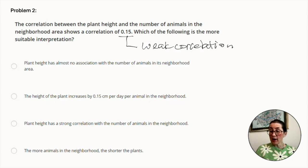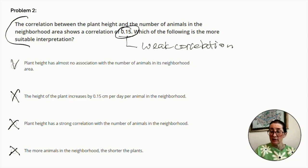Let's start from bottom to top. The more animals in the neighborhood, the shorter the plants. Given the weak correlation, this would not be the correct answer. Plant height has a strong correlation with the number of animals in the neighborhood. Again, dealing with a weak correlation, this cannot be the answer either. The height of the plant increases by 0.15 centimeters per day per animal in the neighborhood. Our question deals nothing with the plant height growth, and the 0.15 figure is not centimeters, it's correlation. So this is not the answer. Finally, plant height has almost no association with the number of animals in its neighborhood area. Given the weak correlation, this is indeed the correct answer.